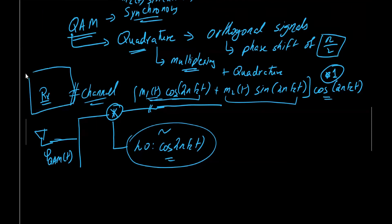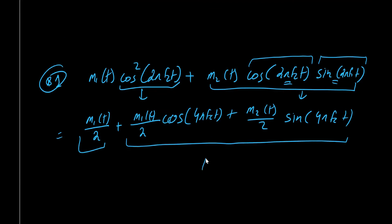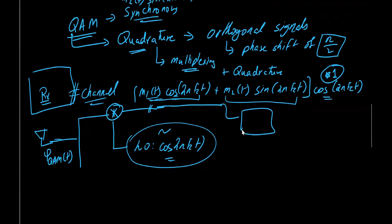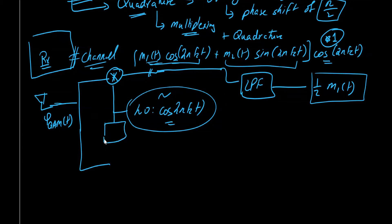At the receiver, we are interested in the message signal. Whatever components are at 2fc frequency, we reject them using a low-pass filter. After the low-pass filter, we are left with (1/2)·m1(t). We have successfully decoded and recovered the first message signal.